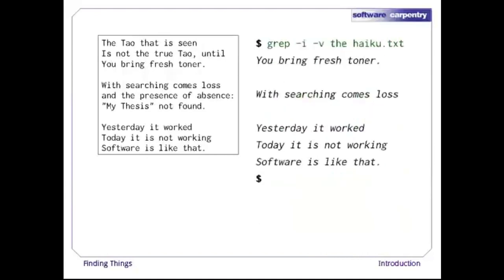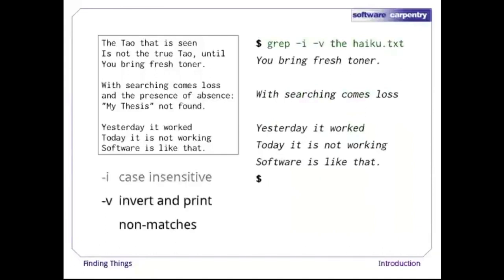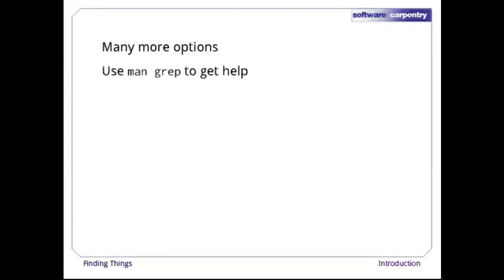Here's another example. -i makes matching case insensitive, while -v inverts the match so that it only prints lines that don't match the pattern. grep has lots and lots of options. To find out what they are, we can type 'man grep'. man is the Unix manual command — it prints a description of a command and its options and, if you're lucky, provides a few examples of how to use it.